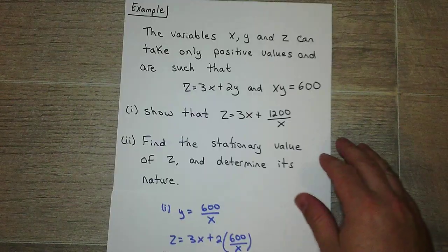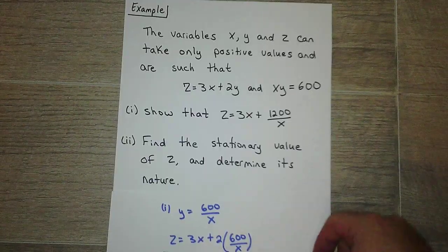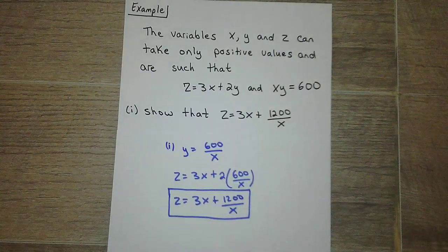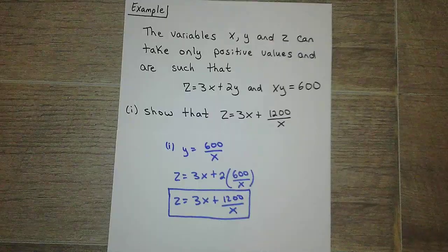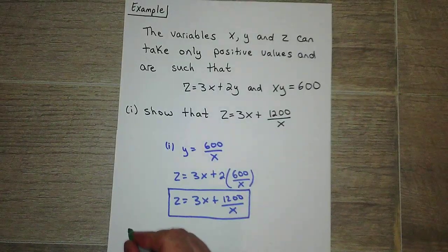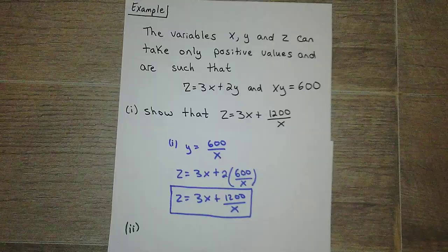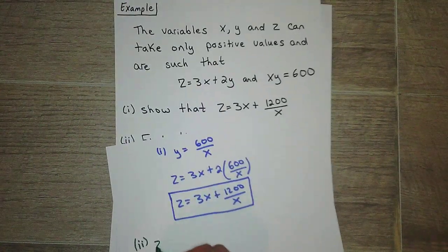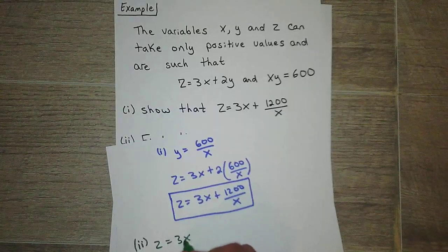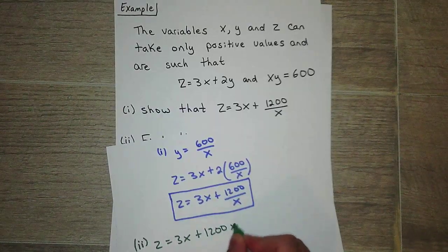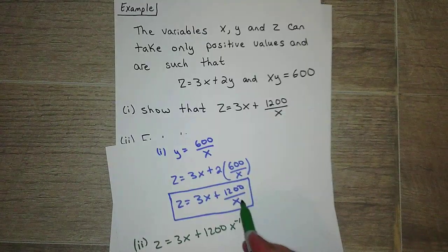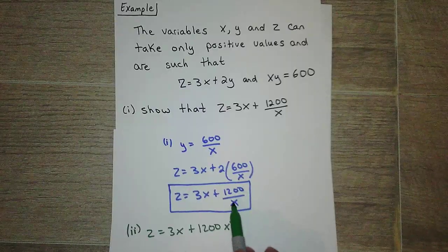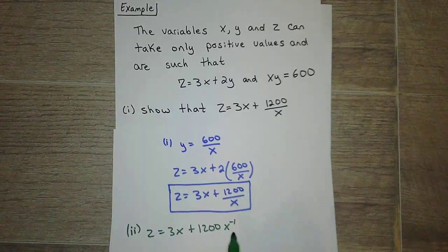Okay, so that's part (i). Part (ii): find a stationary value of z, which means we got to find x first, and then we're going to determine its nature. Okay, so stationary value is when the derivative is set equal to 0. So take the derivative of this. First I'm going to rewrite this using a negative exponent. Remember, to take derivatives you have to have exponents. So instead of writing this as 1200 over x, I write it as 1200 times x to the negative 1.